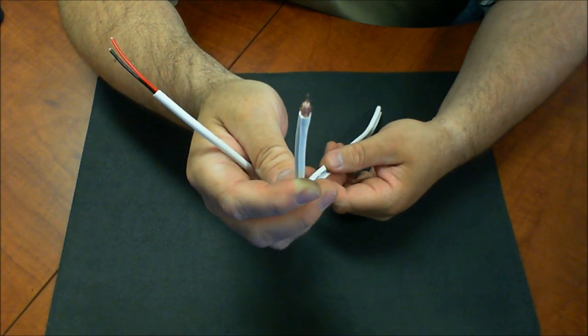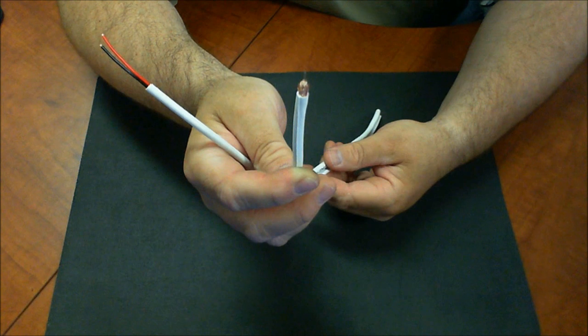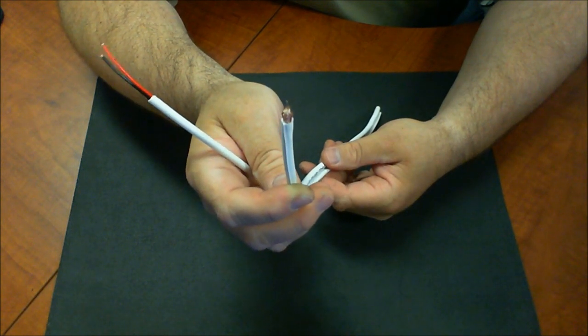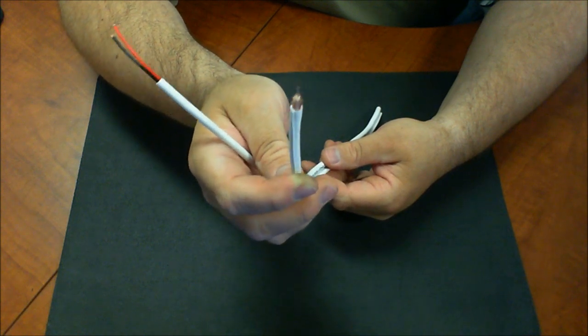This cable has a 20-gauge center conductor and a 95% copper braid. So it really has all the characteristics of a high-performance CCTV cable.